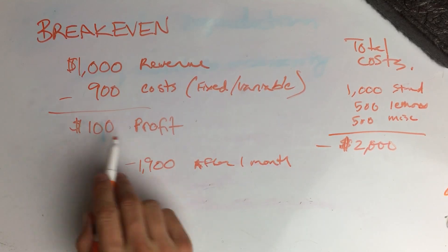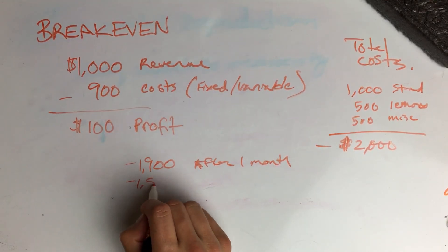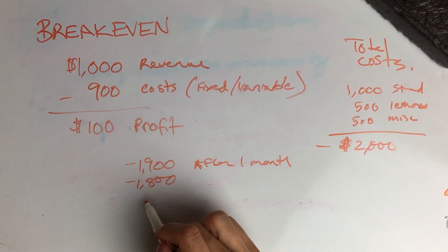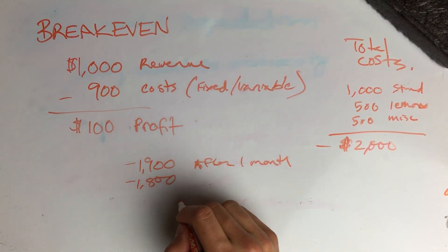After two months, made another hundred dollar profit, you're at $1,800. Eventually after 19 months you are going to hit a zero point where your profit balances with your costs to date.